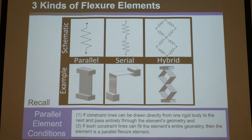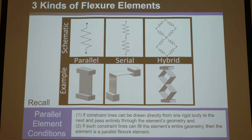There are three ways to categorize elements. A flexure element is a flexible geometry that deforms over the entire geometry and constrains certain directions while allowing other directions. They're modeled or drawn in schematics just as traditional springs. There are three categories of them.